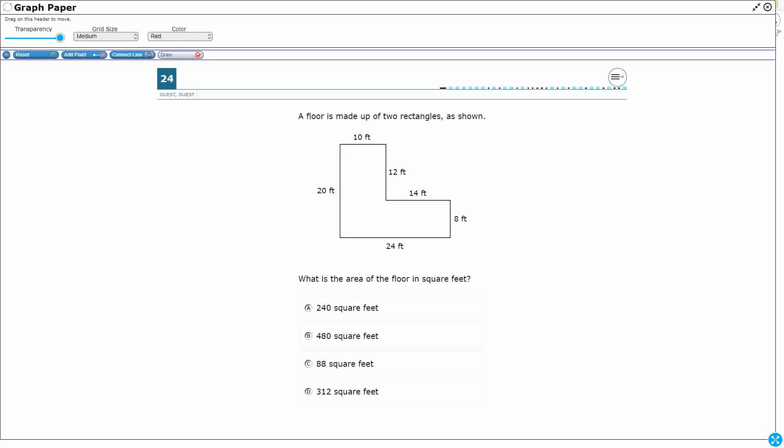So we have a floor made up of two rectangles and we need to find the area of the floor in square feet. Now area gets confused a little bit with perimeter, so let's make sure we understand the difference between the two.